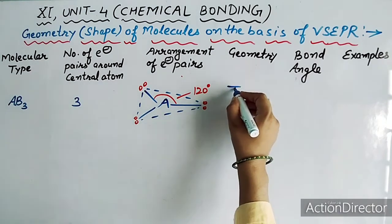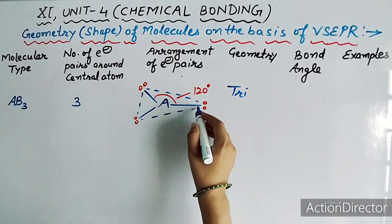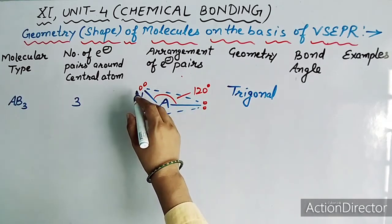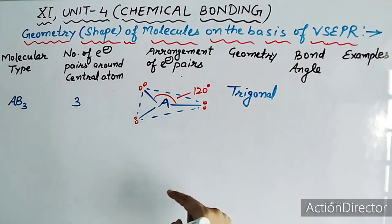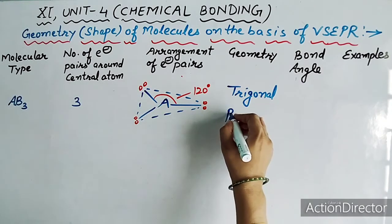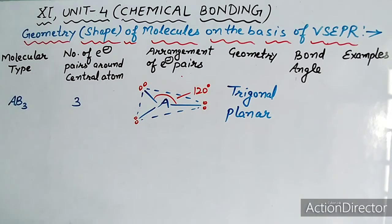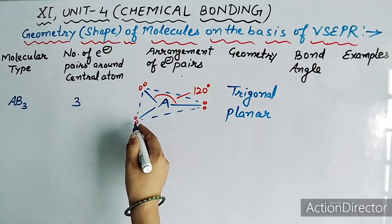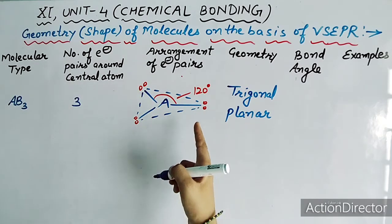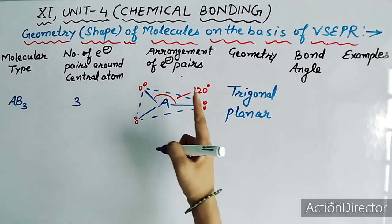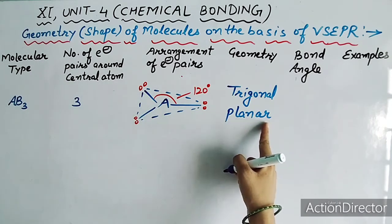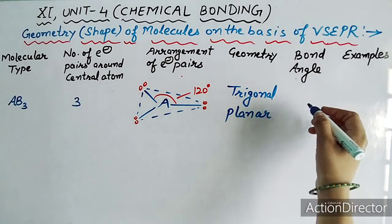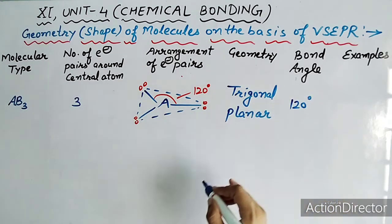VSEPR theory के rule के according ये electron pairs maximum apart from each other रहते हैं, तो maximum angle 120 degree होगा। तीनों electron pairs एक ही plane के अंदर होते हैं, इसलिए shape trigonal planar होती है। Bond angle 120 degree।